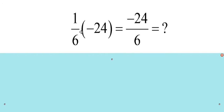1 sixth times negative 24 equals negative 24 divided by 6, which equals negative 4.